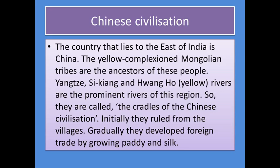The country that lies to the east of India is China. The yellow-complexed Mongolian tribes are the ancestors of these people. Hangtis, Sikigang and Hangho rivers are the prominent rivers of this region. So they are called the cradles of Chinese civilization. Initially they ruled from the villages, and gradually they developed foreign trade by growing paddy and silk.